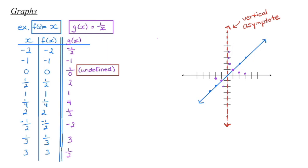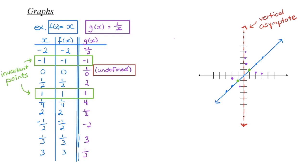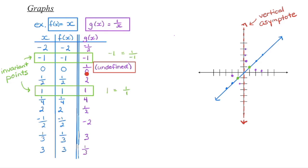The vertical asymptote is a line that the graph is going to approach but never touch or cross. We also have two points that are the same on both the original function and the reciprocal — these are called invariant points. Points that don't change from one graph to the next occur when the y-coordinate is negative 1 or positive 1. Every y-coordinate on the reciprocal function is the reciprocal of the y-coordinate on the original. Reciprocating 1 gives 1, and reciprocating negative 1 gives negative 1, so those are the only invariant values.